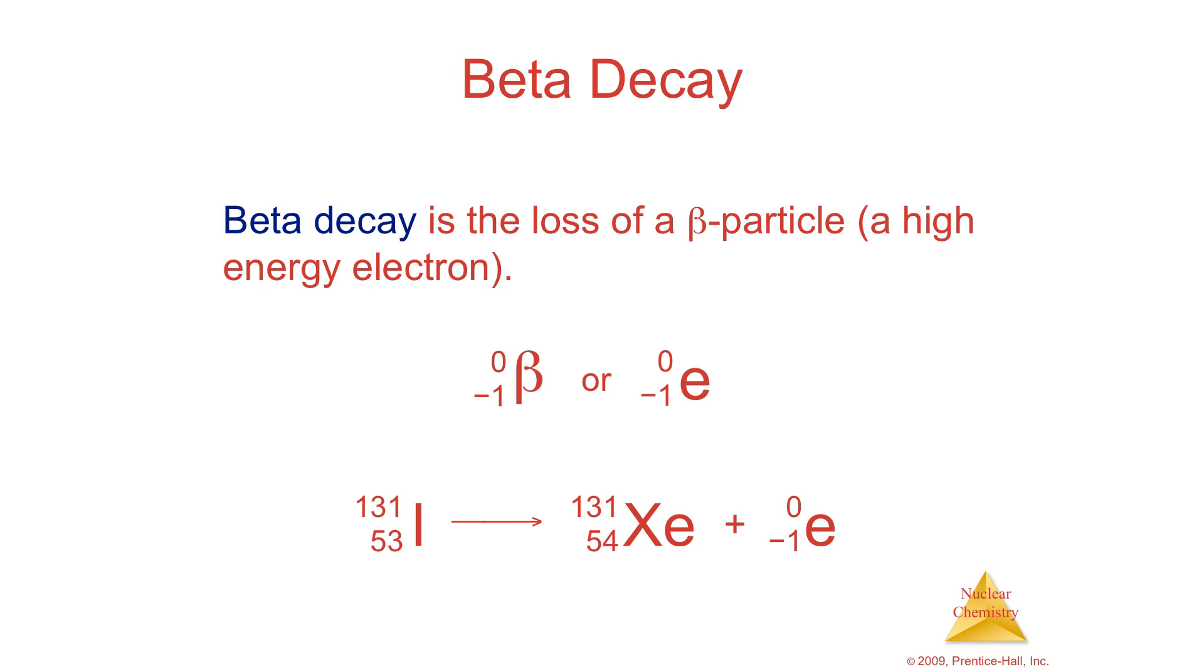Now watch this. Beta decay is loss of an electron. So a beta beam, a beta radiation, is not sending out helium nuclei, but sending out instead very high-energy electrons. It's a beam of electrons.